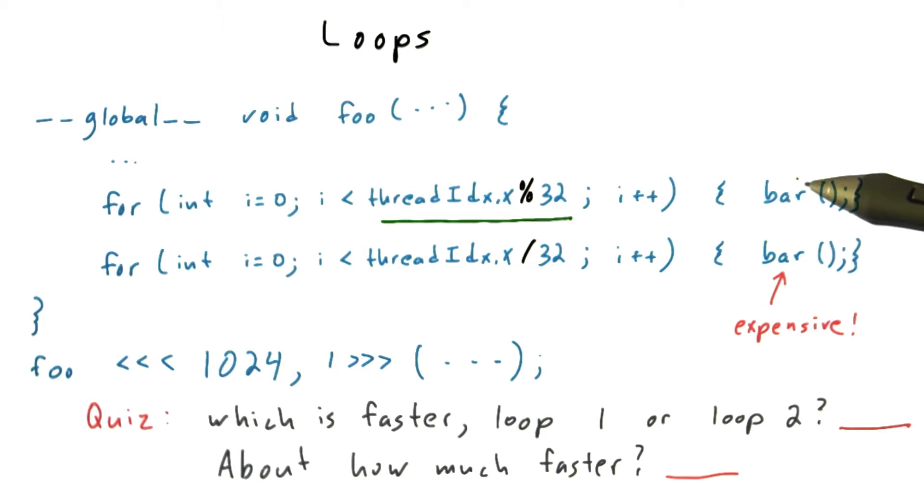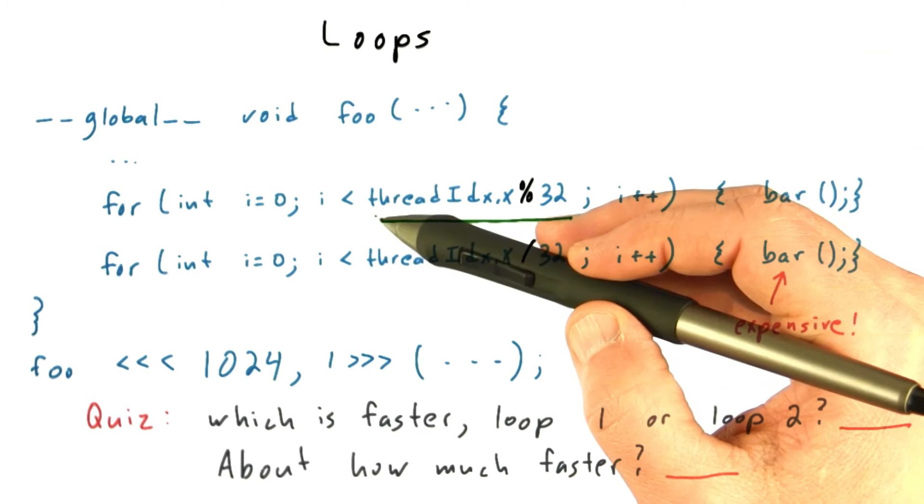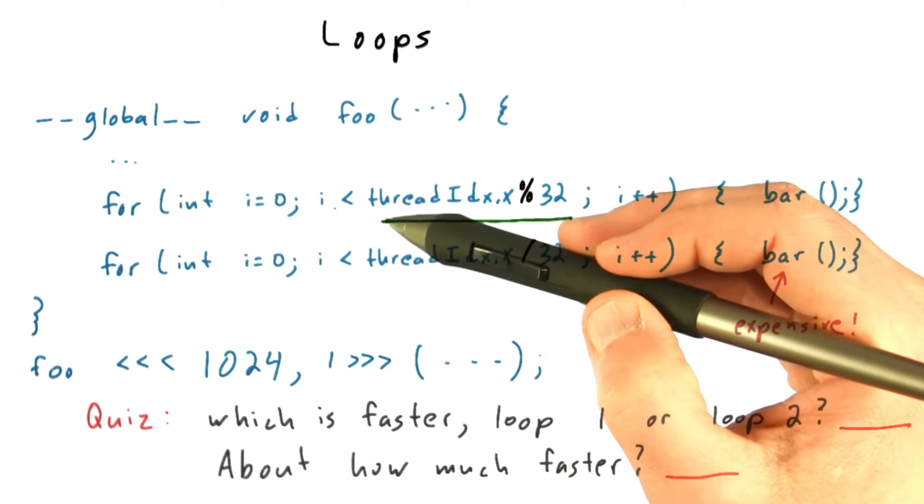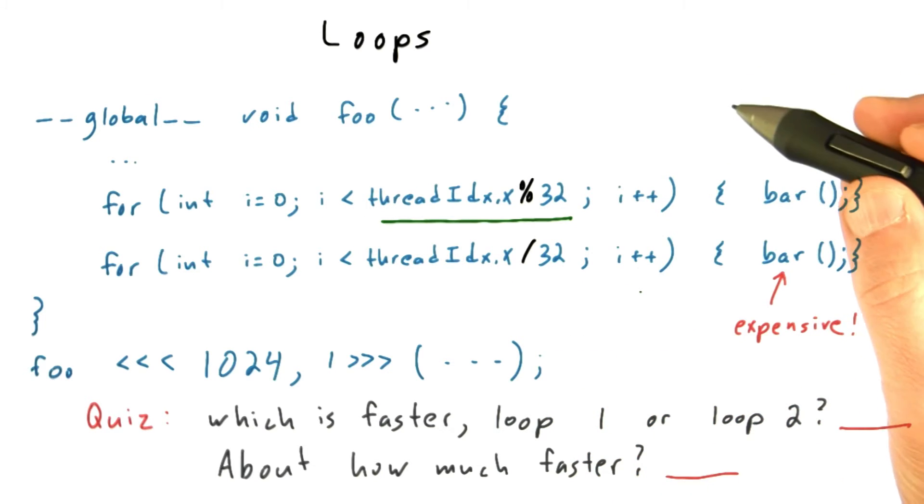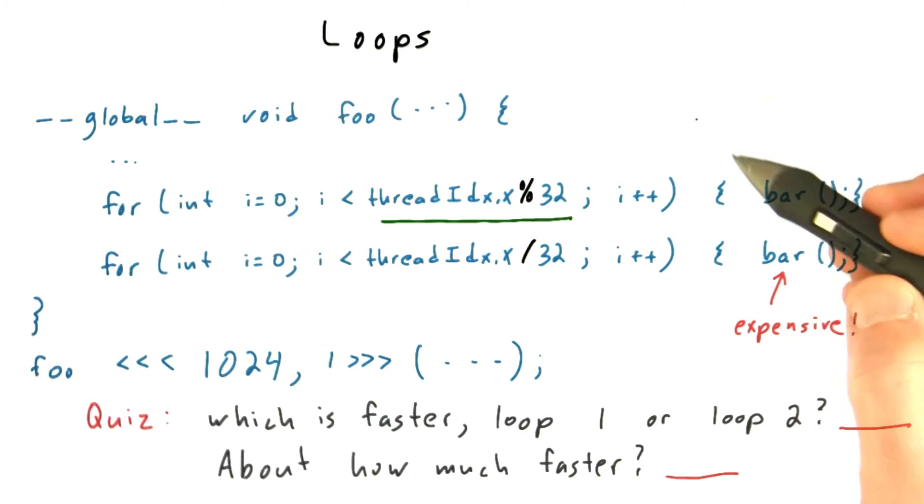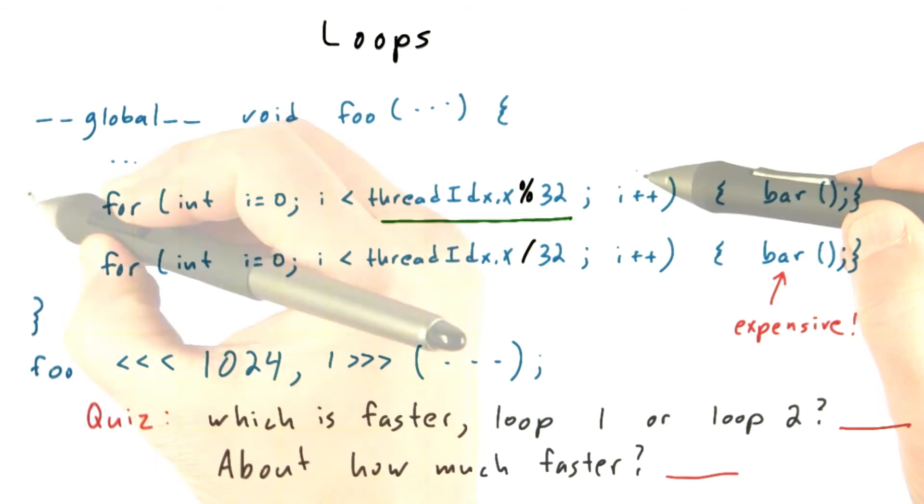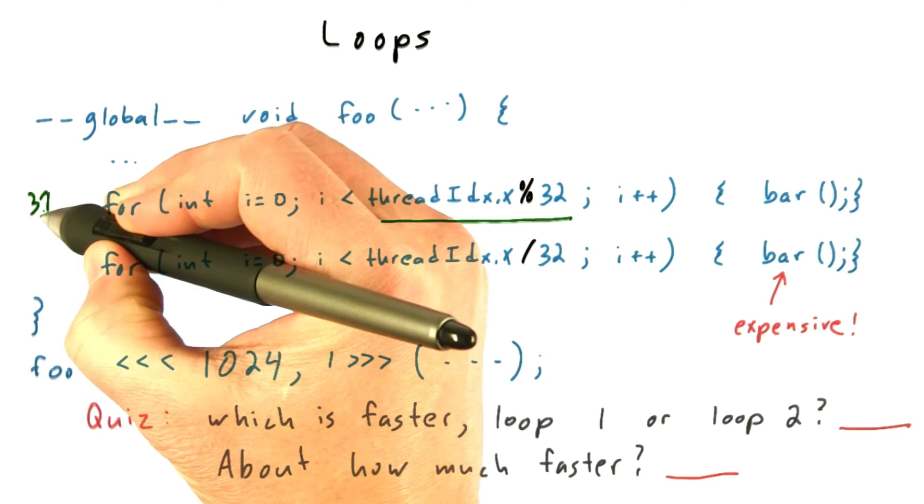Now, some of those times, some of the threads will be deactivated. So the very first time, thread 0 will not execute the bar function. It'll be deactivated because i will not be less than 0. And the next time, threads 0 and 1 will be deactivated and so forth. Ultimately, the total amount of time that the warp has to spend in this loop depends on the total number of time that any one thread has to spend on it. Each warp will execute this loop 31 times.